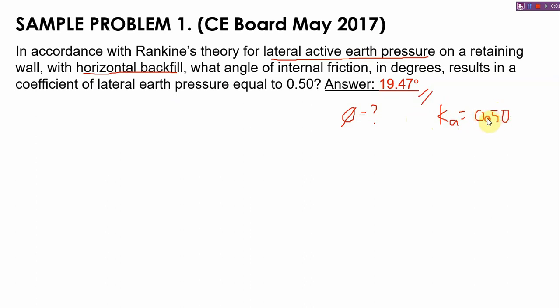Now for the solution, di ba? For active lateral earth pressure, kung active, A active, not passive. So K sub A is 1 minus sine phi over 1 plus sine phi.